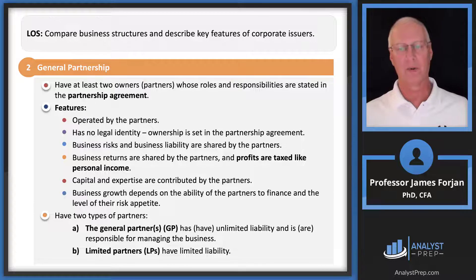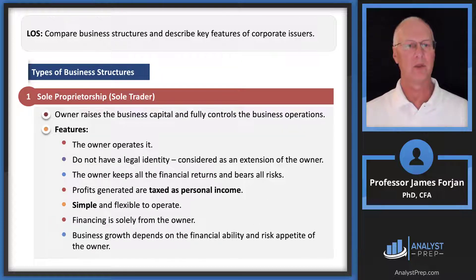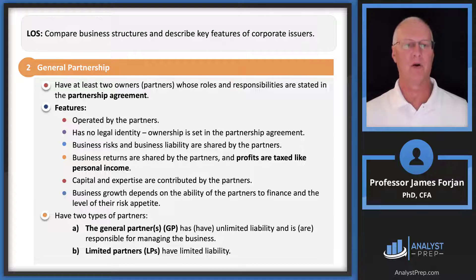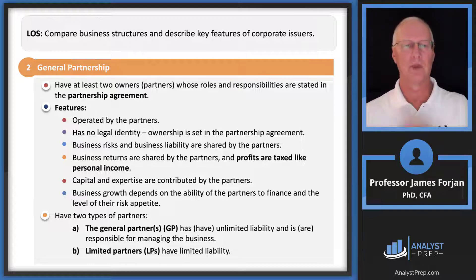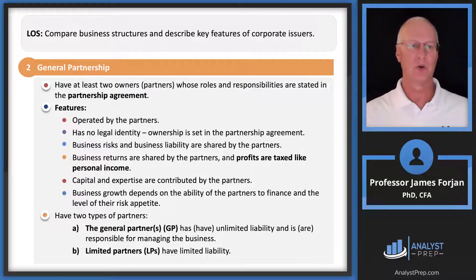There are lots of sole proprietorships, but many entrepreneurs realize they need help and enter into a partnership. A partnership looks almost identical to a sole proprietorship, except the business is divided among however many partners there are. Business returns are shared by partners and profits are taxed like personal income — that's the big similarity between a general partnership and a sole proprietorship. There are two types of partners: general partners have unlimited liability and are responsible for managing the business, while limited partners have limited liability.